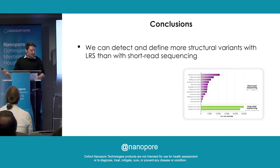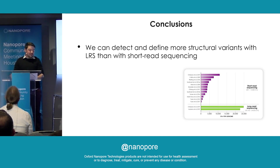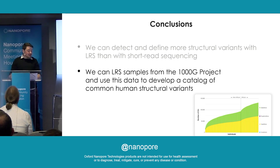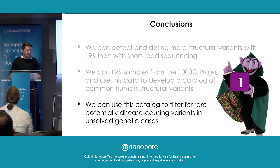In conclusion: we can detect and refine more structural variants with long-read sequencing than with short-read sequencing. We can use long-read sequencing from samples from the Thousand Genomes Project to develop a catalogue of common human structural variants. And we can use this catalogue to filter for rare, potentially disease-causing variants in unsolved genetic cases.